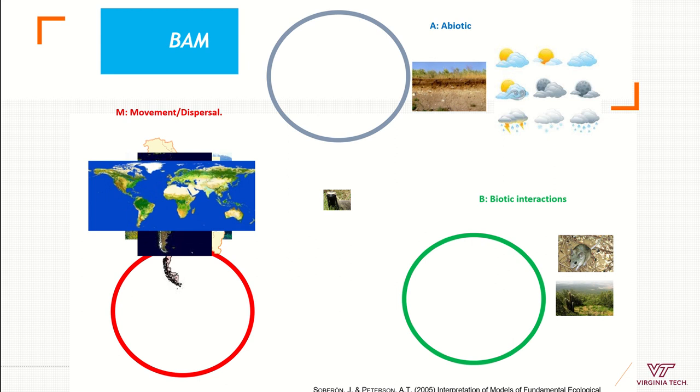Generally we consider the capacities of these species to disperse. That's something we should understand from our organism. Is it a mosquito that flies one kilometer during its entire life, or maybe 20 kilometers? My study areas are going to be different based on the dispersal capacity of my species.